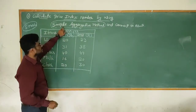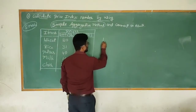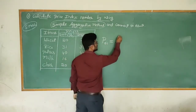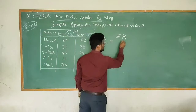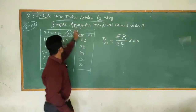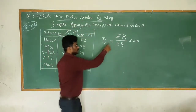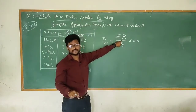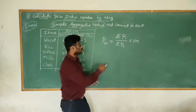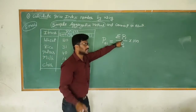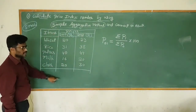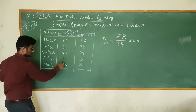Now let us identify the formula for the simple aggregative method. The price index P₀₁ is calculated as: summation of P₁ divided by summation of P₀, multiplied by 100. Here, summation of P₁ means the total of prices for the current year, and summation of P₀ means the total of prices for the base year.